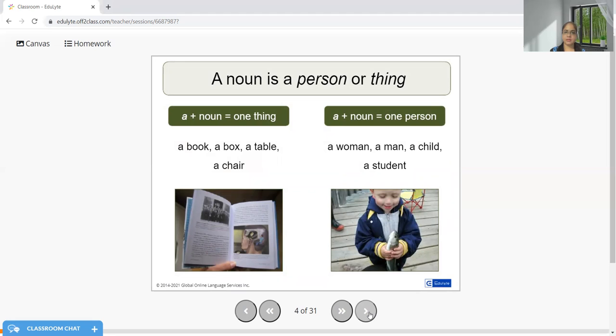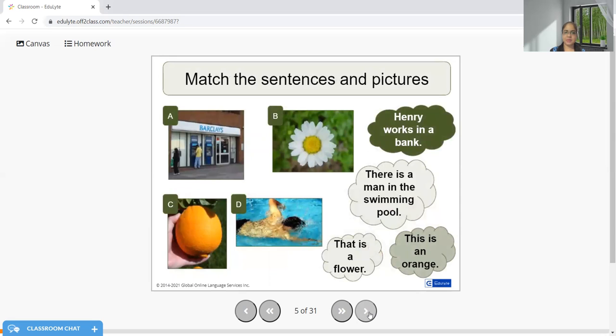A book, a box, a table, a chair, a man, a woman, a child, a student. Therefore 'a' can be used with living beings and non-living things. Wherever we need to denote something one, we will be using the article 'a'. Try to pronounce it as 'a'. Let's continue.